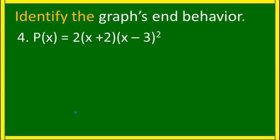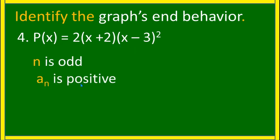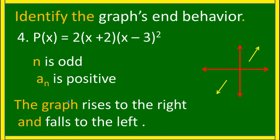Another example: p(x) = 2(x + 2)(x − 3)². The degree of the polynomial is 3 and n is odd. The leading coefficient is 2, which is positive. Therefore, the end behavior is the graph rises to the right and falls to the left.